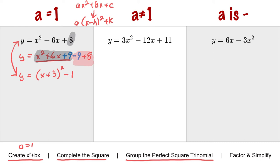In the second example, my a is not 1. It's 3. But the process is to make it look like x squared plus bx. So I'm going to common factor to the point where I get what I want, which is x squared plus bx.